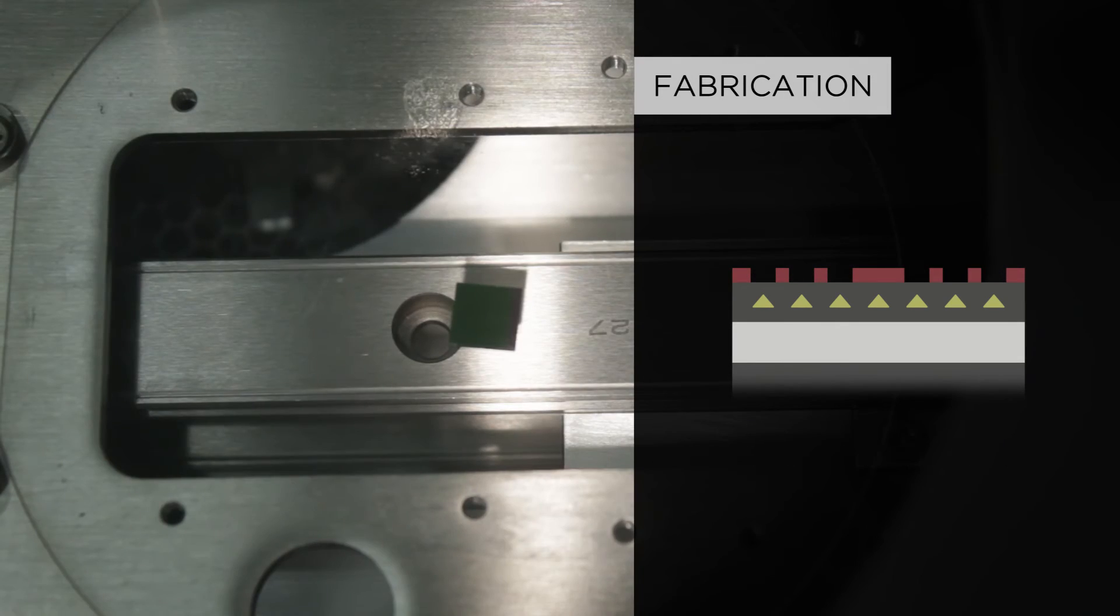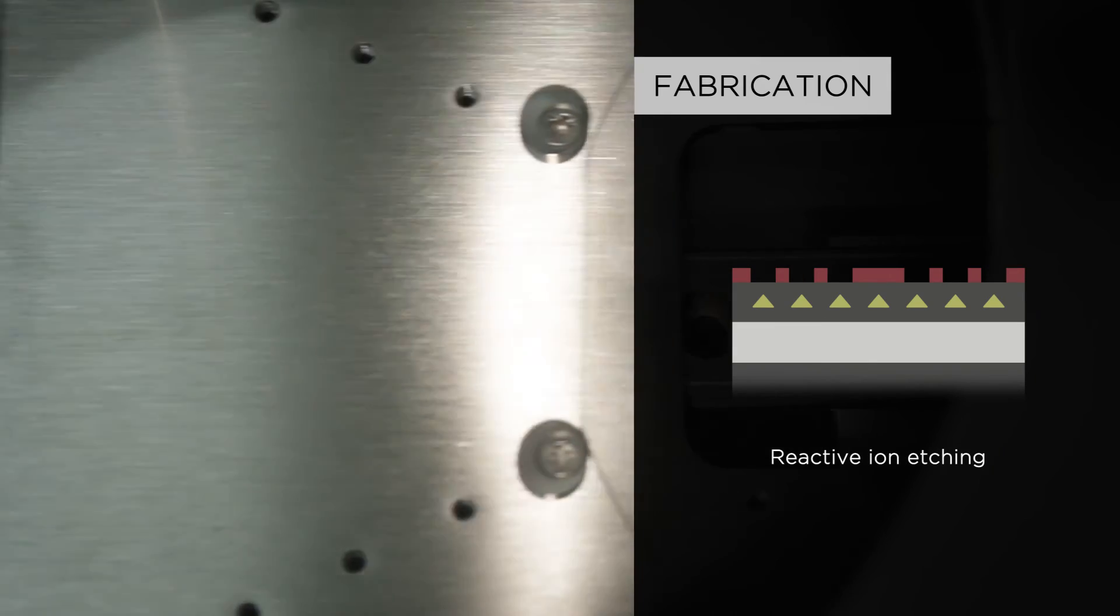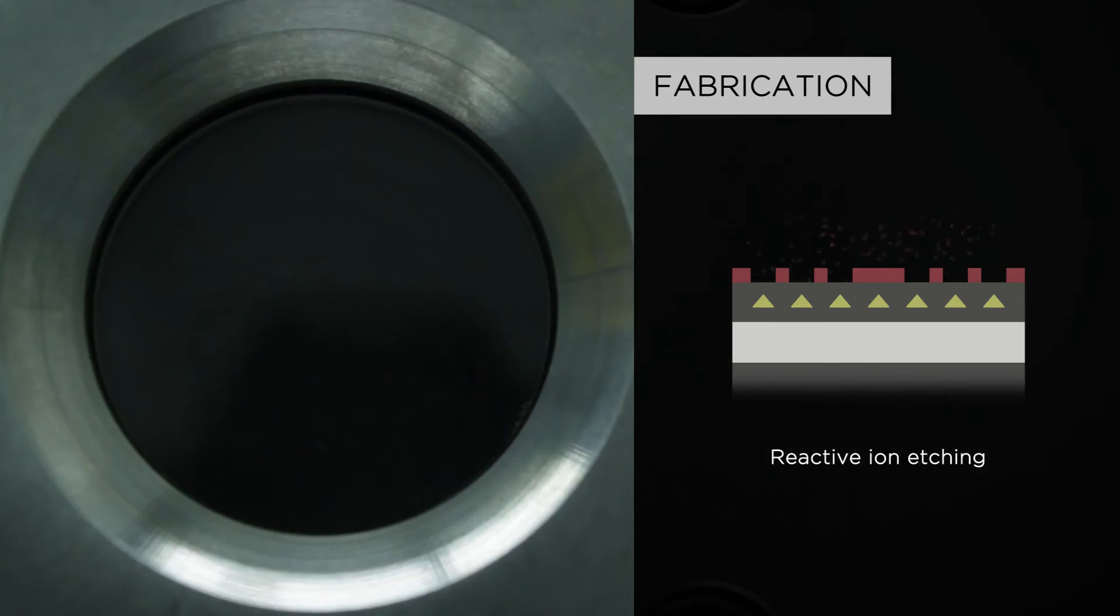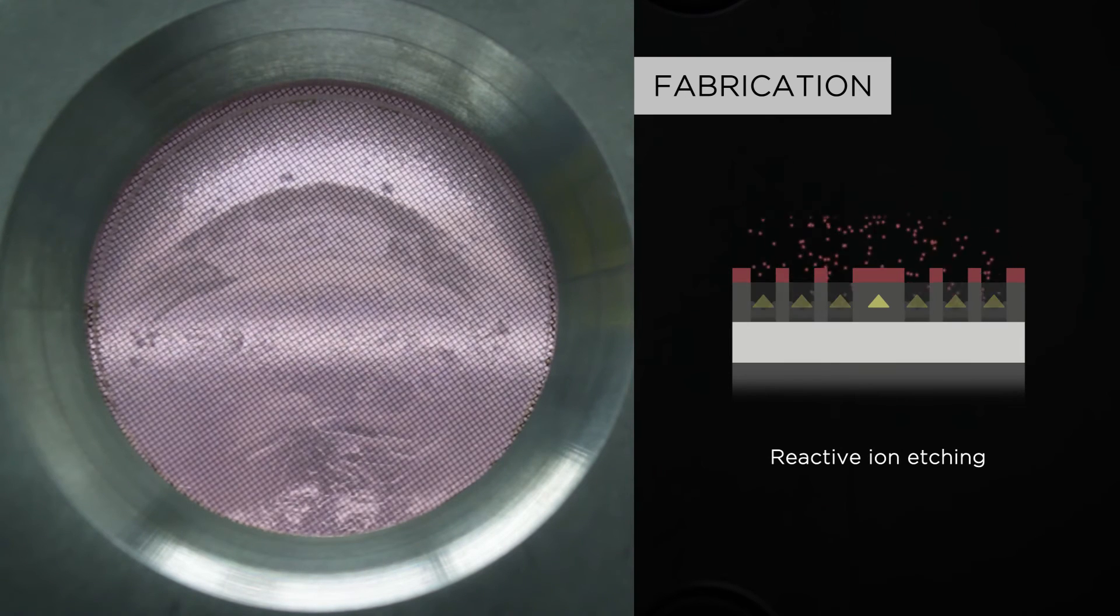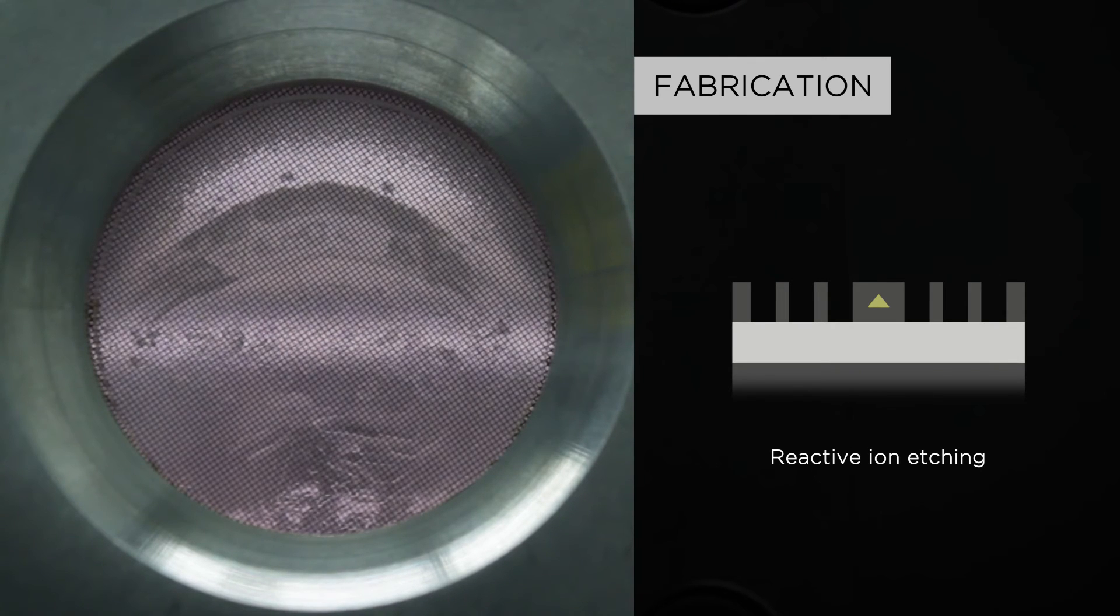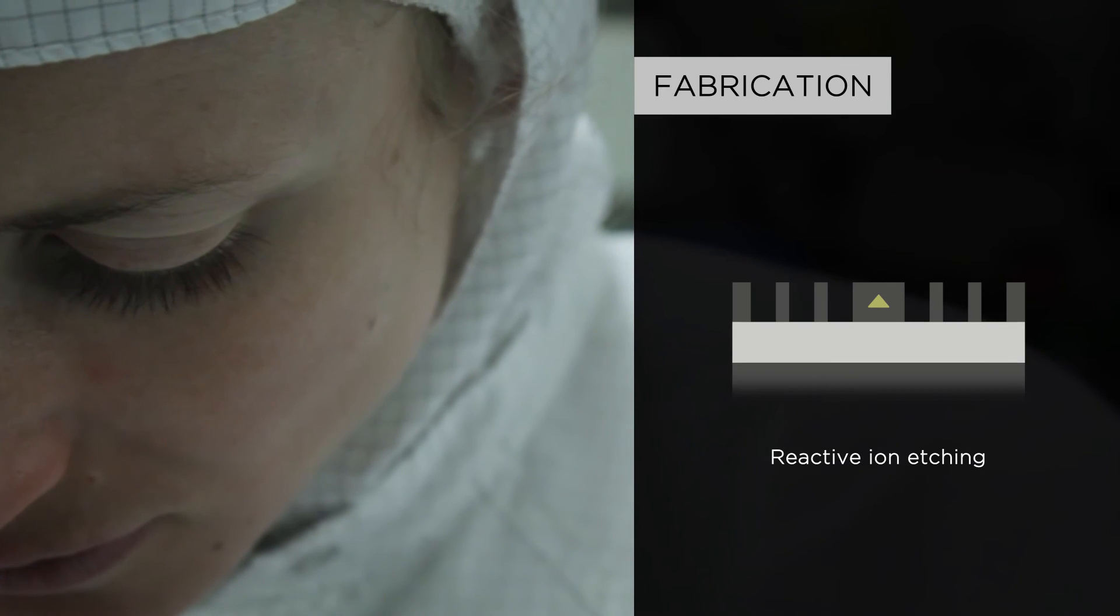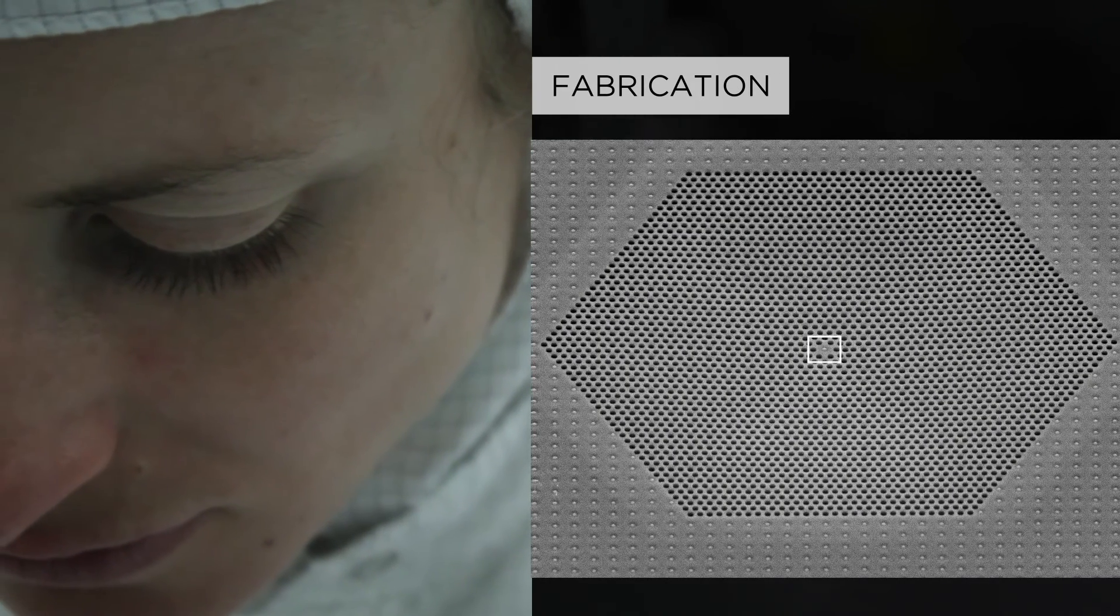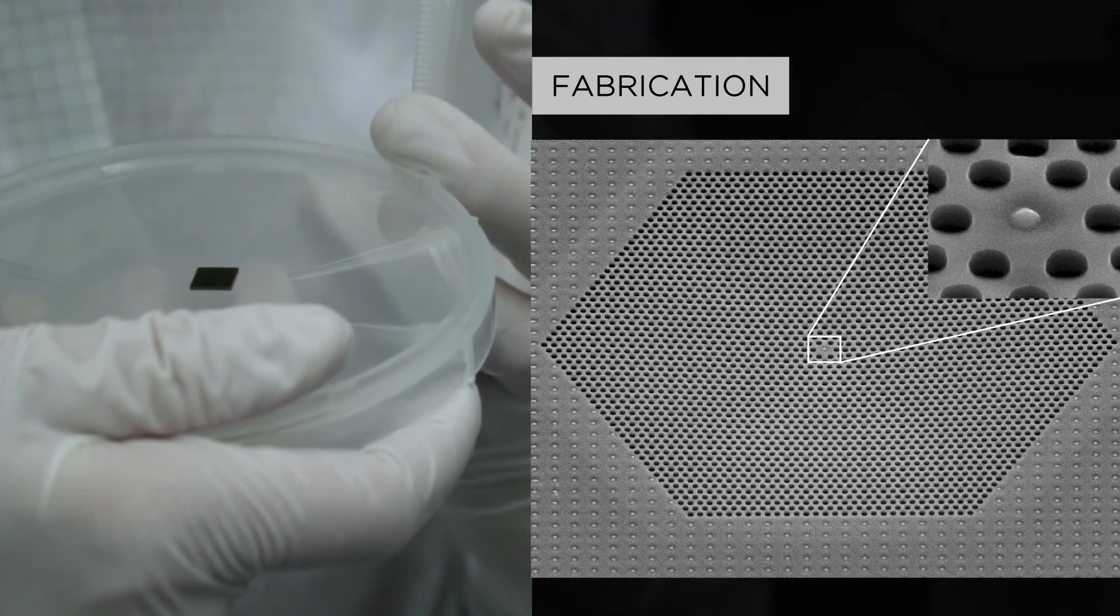For that purpose, reactive ions in a plasma are accelerated towards the negatively charged sample, thereby removing the substrate material in all areas that are not protected by the mask. The etching step for the air holes also removes the quantum dots except the one in the center of the cavity.